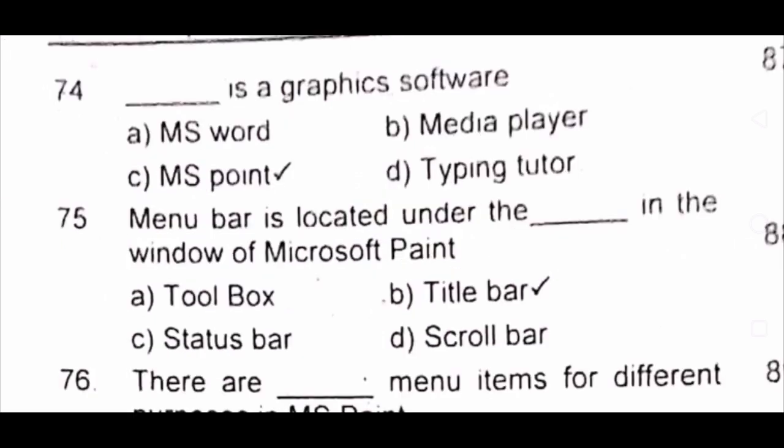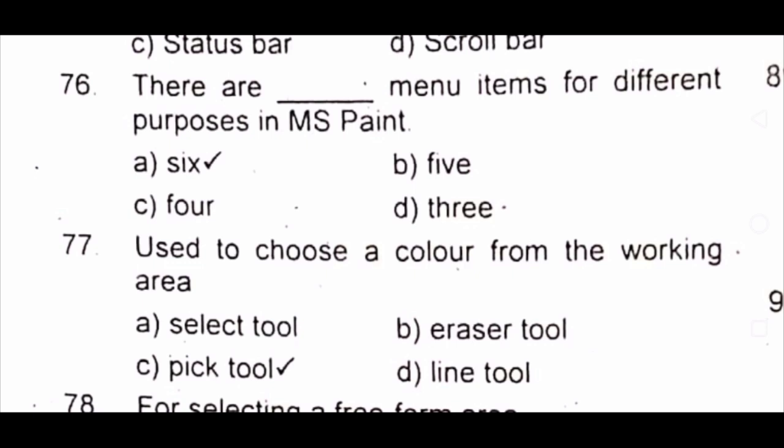Question 74: Dash is a graphics software. A) MS Word B) media player C) MS Paint D) typing tutor. The answer is C) MS Paint. Question 75: Menu bar is located under the dash in the window of Microsoft Paint. A) toolbox B) title bar C) status bar D) scroll bar. The answer is B) title bar.